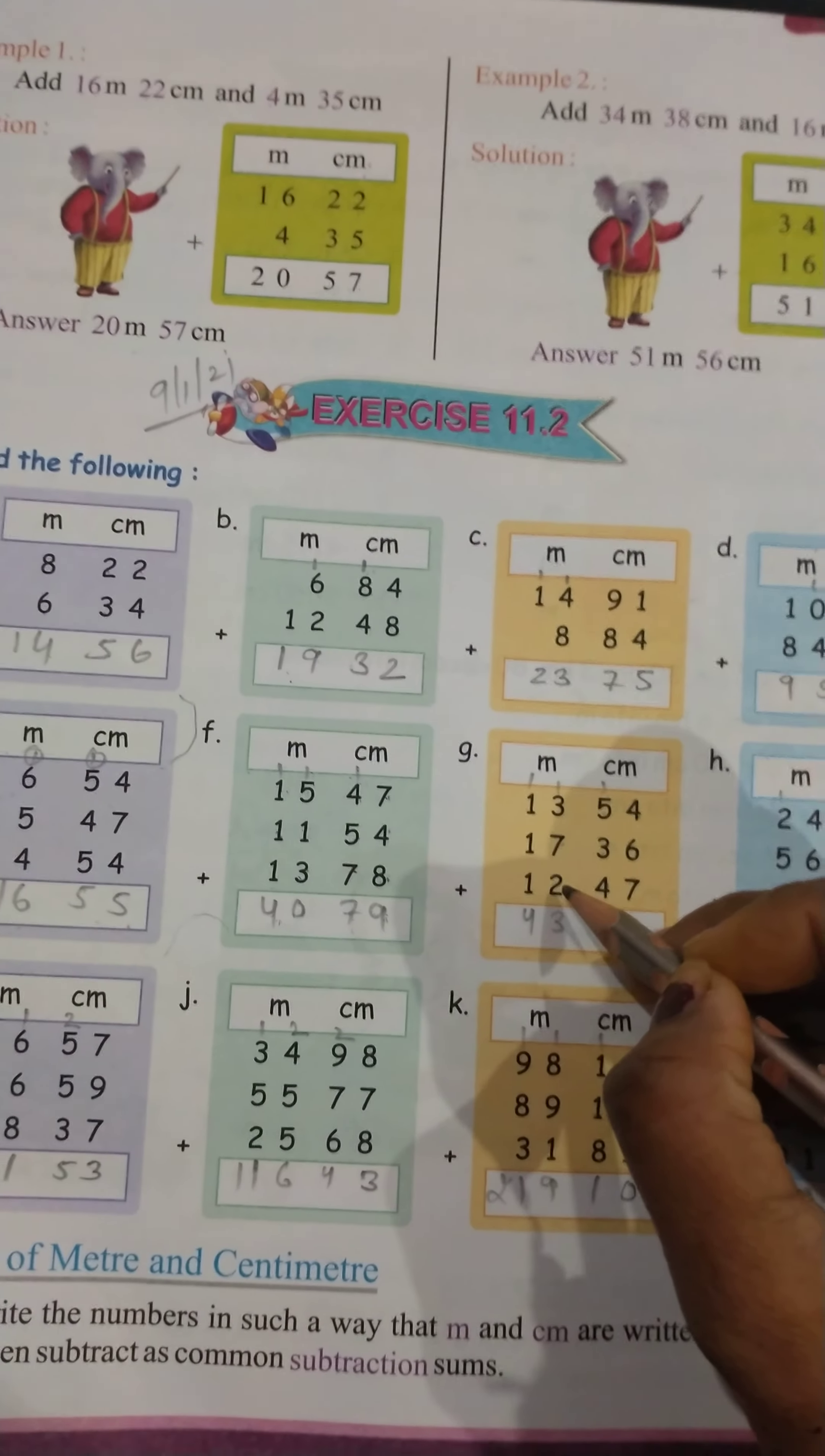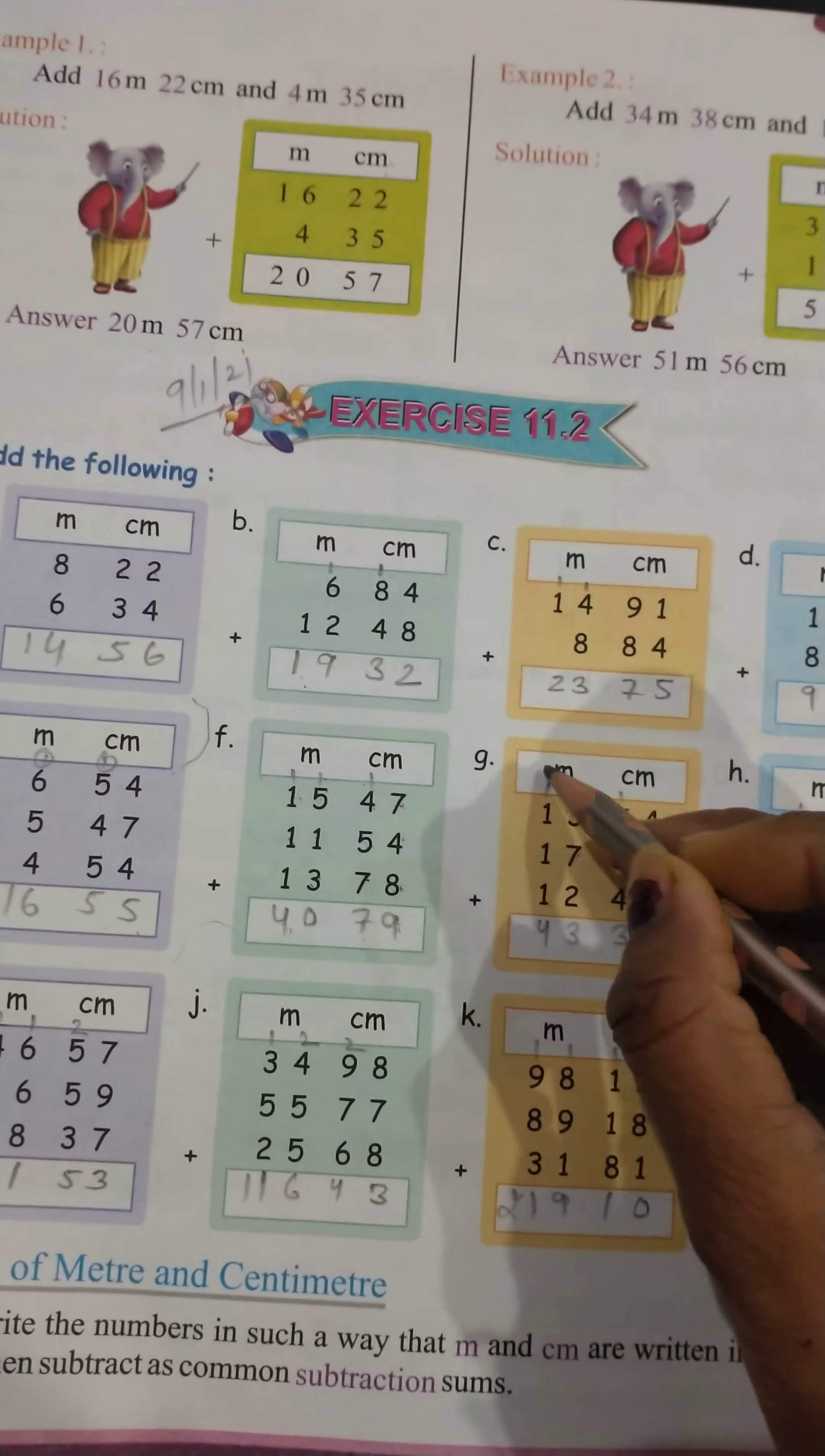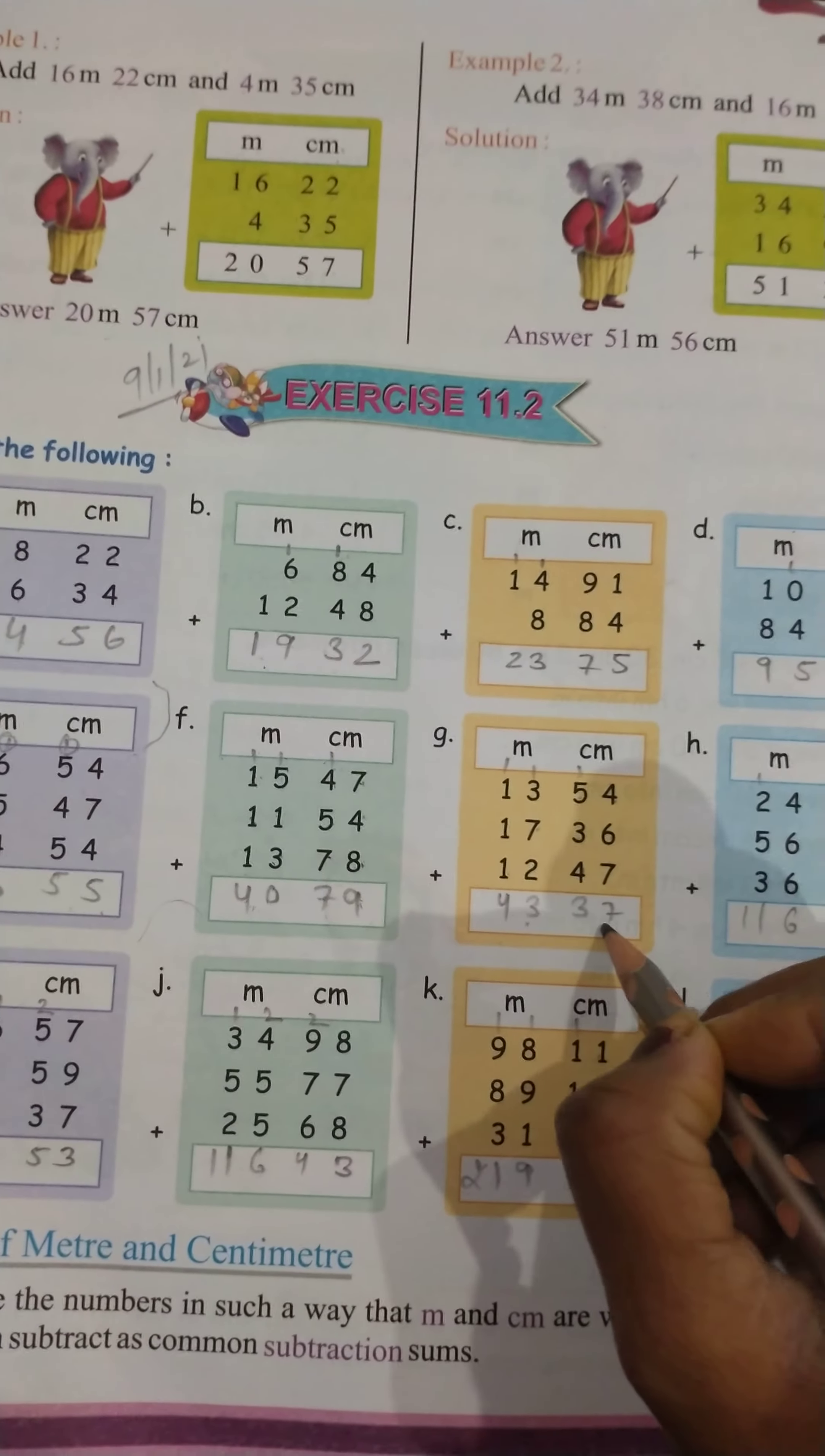10 plus 2, 12. 12 come plus 1, 13. 13 come 1 carry. 1, 2, 3 plus 1 carry, 4. 43 meter, 37 centimeter.